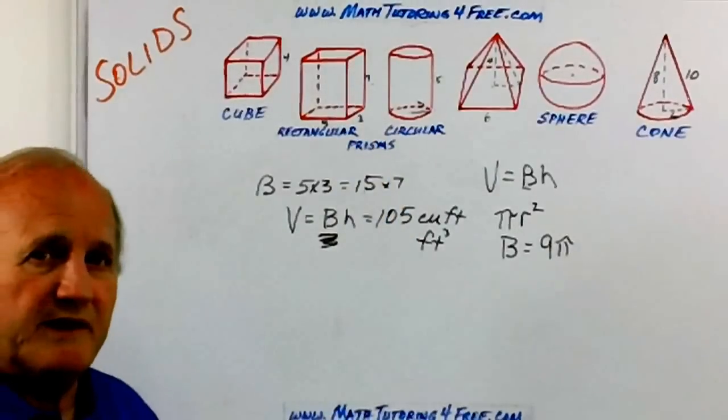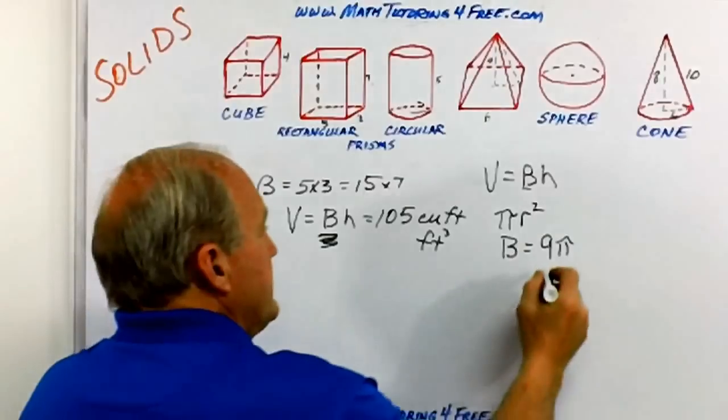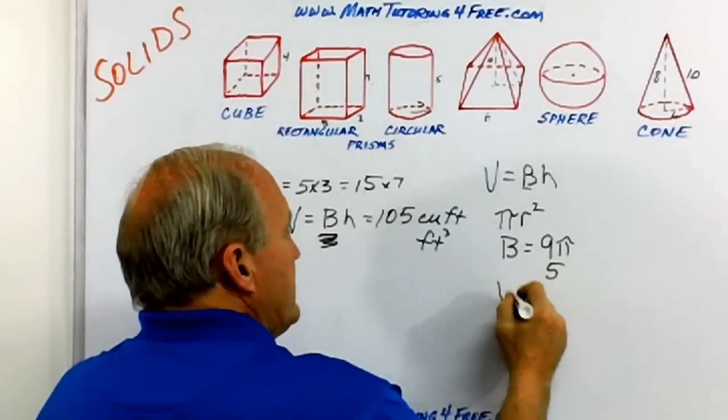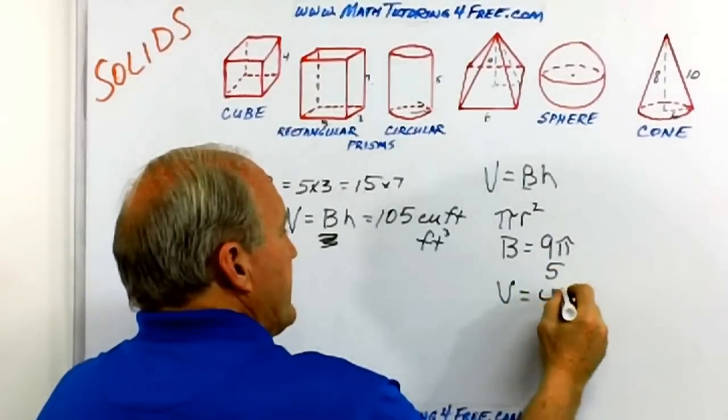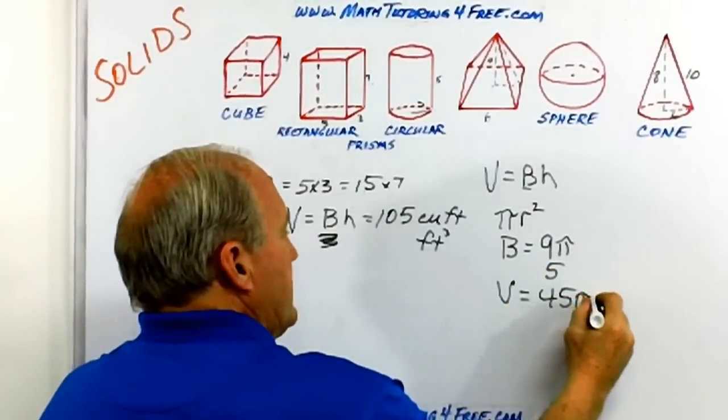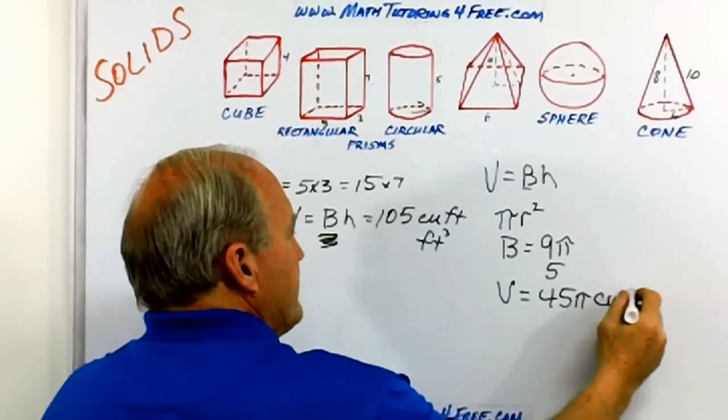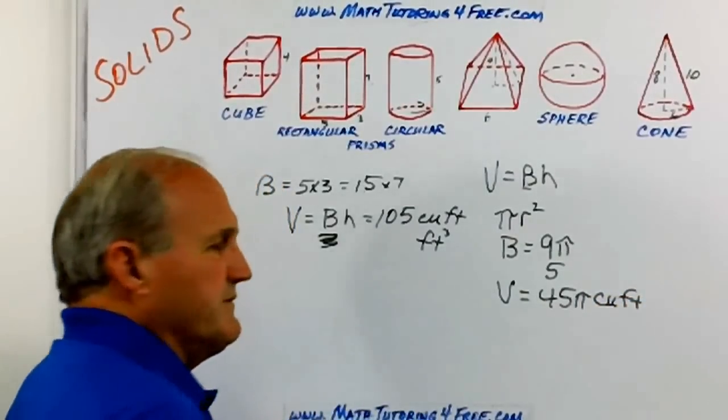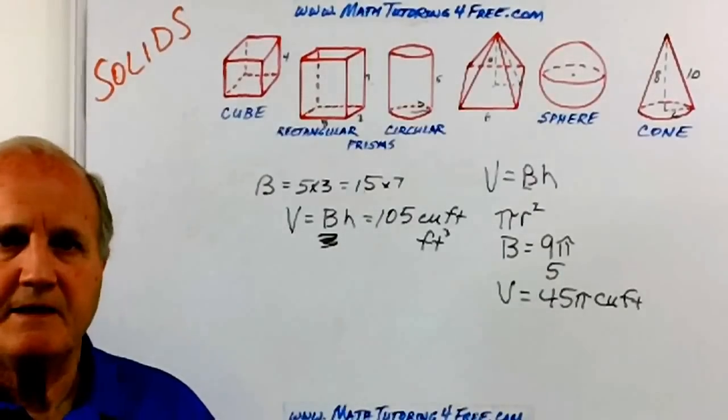In this case, we would multiply that by the height. So the volume would be equal to 45 pi cubic feet, inches, yards, whatever it happens to be.